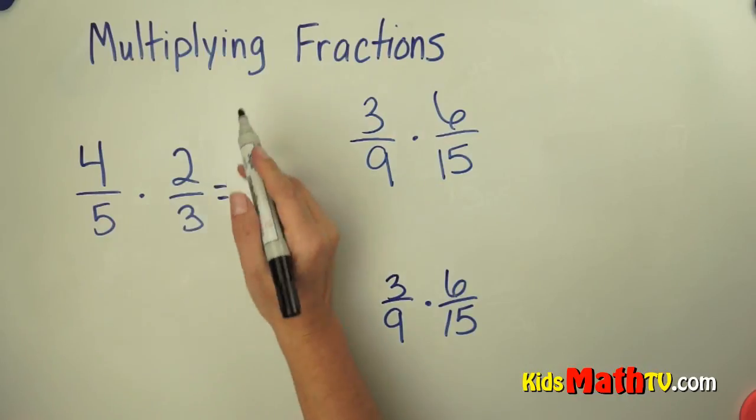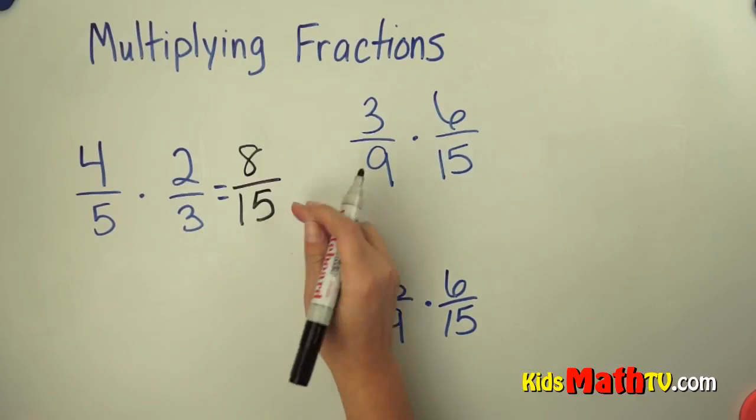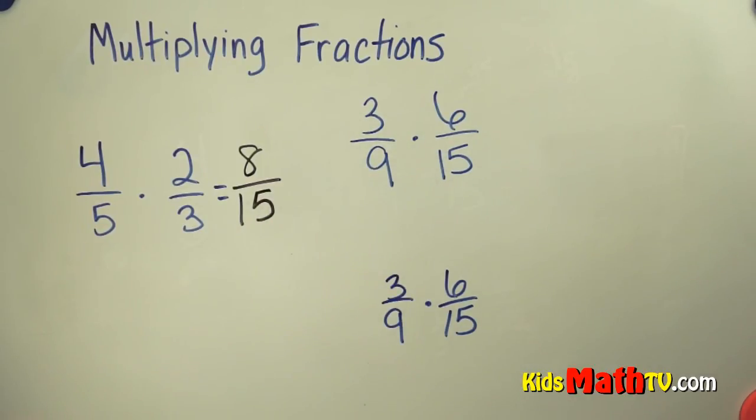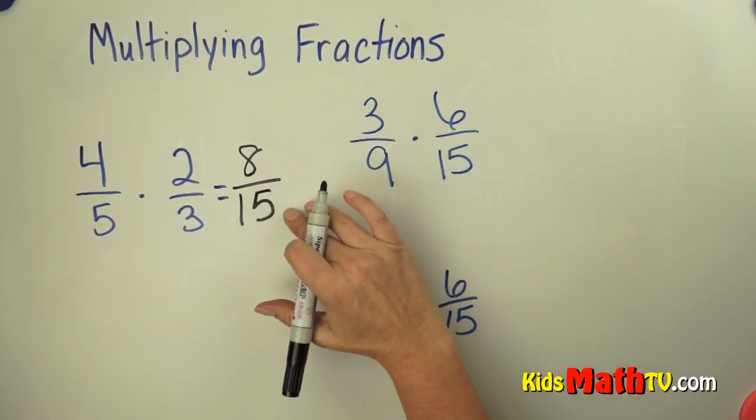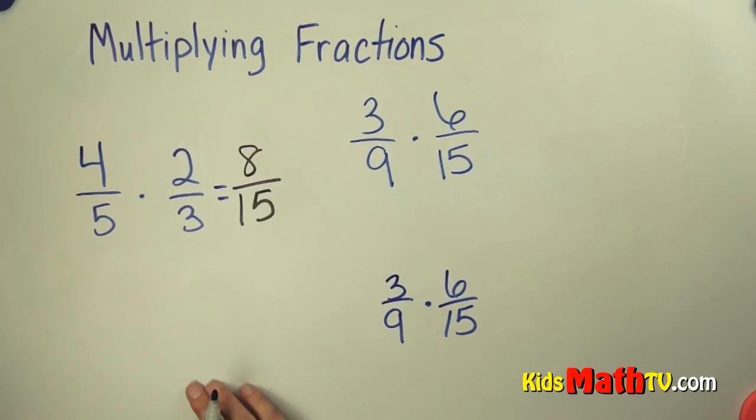So 4 times 2 is 8, 5 times 3 is 15. Then we check to see if we can simplify. Is there a number that will divide 8 and 15 evenly? There is not, so the answer is simply 8 fifteenths.